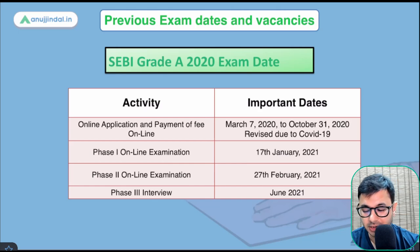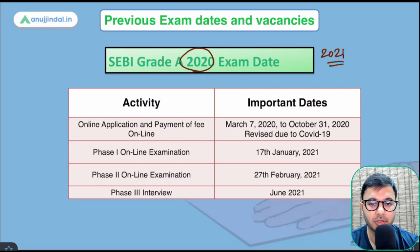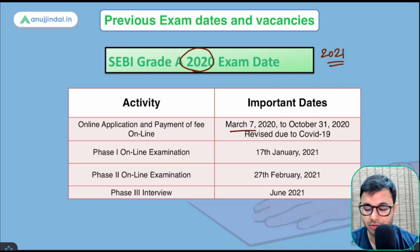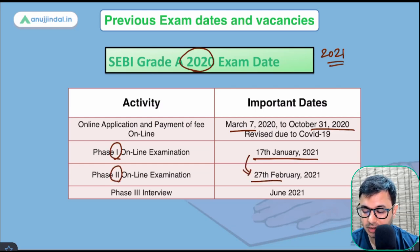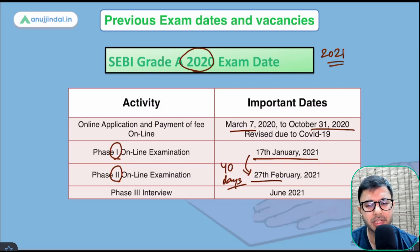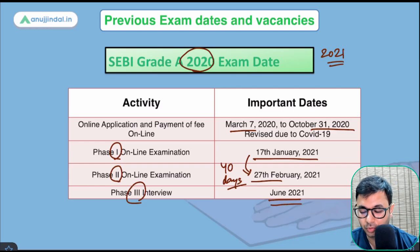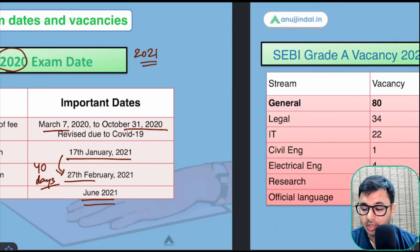Let us start with previous exam dates and vacancies. The 2020 examination ended up happening in 2021 due to COVID delays. The application came out on March 7, 2020, it was postponed till October 31st 2020, and the examination was finally held on 17th January 2021 for Phase 1. Phase 2 was held on 27th February, giving a gap of almost 40 days, which is very good compared to other exams like RBI where you normally get about 30 days.